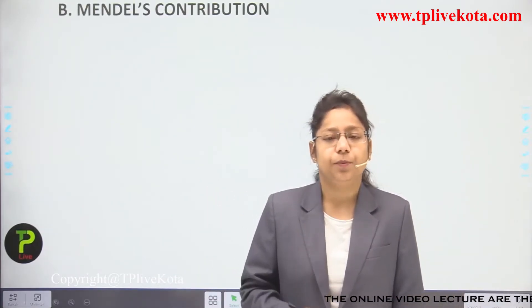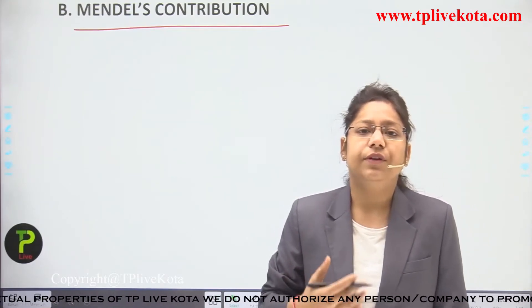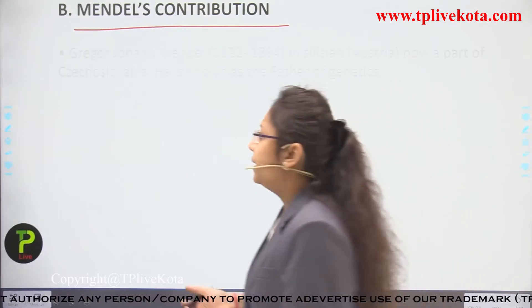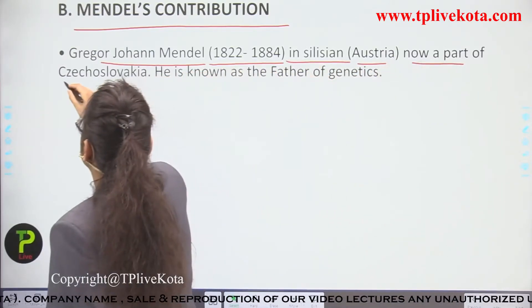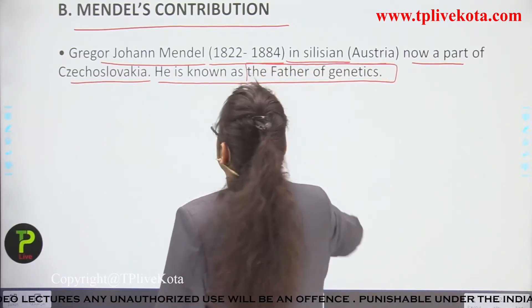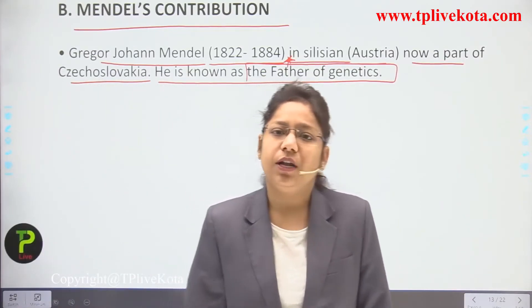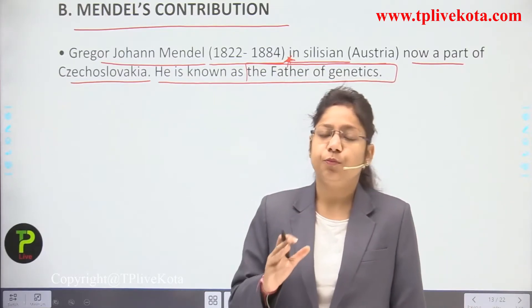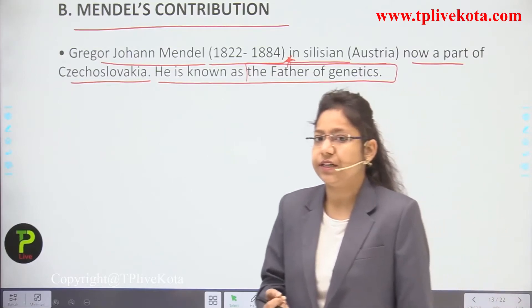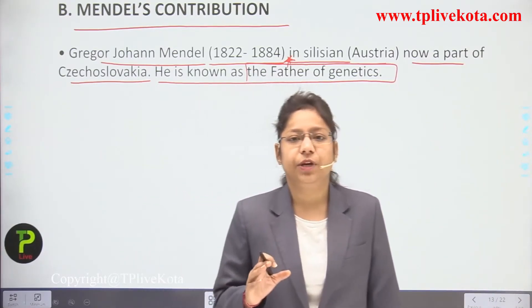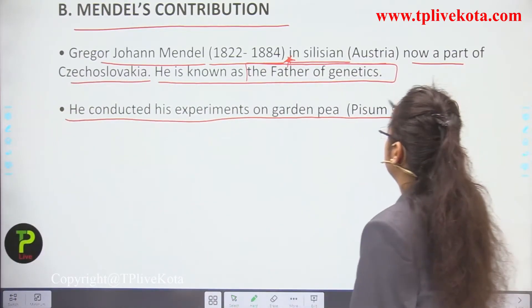Now we move to Mendel's contributions. Gregor Johann Mendel (1822–1884), from Silesian Austria — now part of Czechoslovakia — is known as the father of genetics. He was the only scientist who attempted to solve the mystery behind evolution and heredity, telling us how genes can be transferred from one generation to the next and how new characters develop. He conducted his experiments on garden pea, known as Pisum sativum — a very important scientific name to remember.